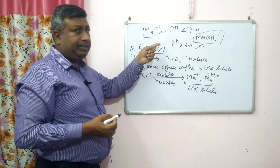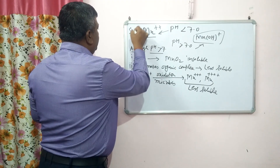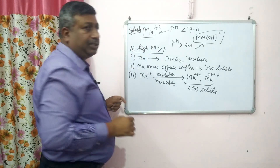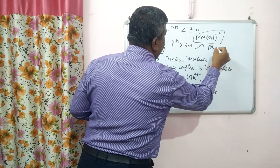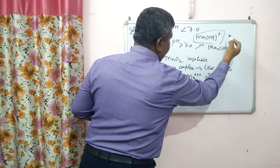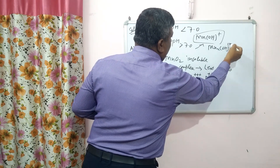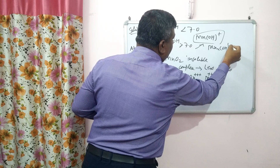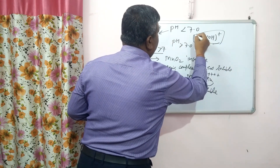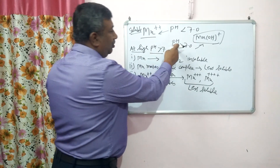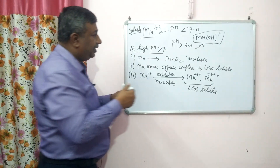At pH less than 7, Mn²⁺ exists as a soluble form available to plants. As pH increases, hydroxyl ions increase and manganese is converted to hydroxide forms such as Mn(OH)⁺ and Mn(OH)₂. At pH more than 7, manganese is also precipitated as MnO₂, which is an important insoluble form.